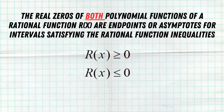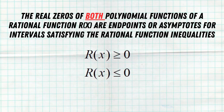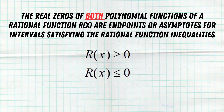The real zeros of both polynomial functions — the one in the numerator and the one in the denominator — are endpoints or asymptotes for intervals satisfying the rational function inequalities r(x) ≥ 0 or r(x) ≤ 0. So here's the deal: if you're solving a rational function inequality, all zeros — both zeros that make the numerator zero and zeros that make the denominator zero — any value that makes the numerator or denominator zero needs to be analyzed as potential endpoints or asymptotes to help solve the inequality. Let's look at an example to make sure it makes complete sense.